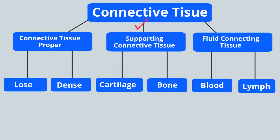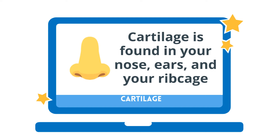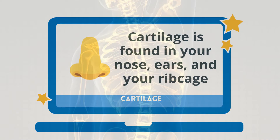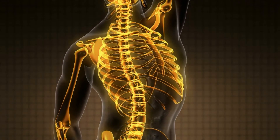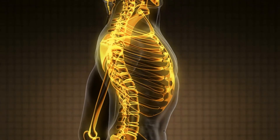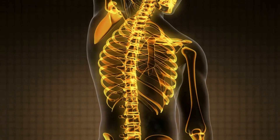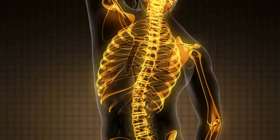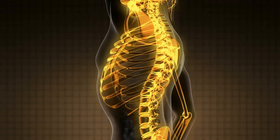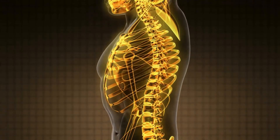We have supporting connective tissue like cartilage. Cartilage provides strength and flexibility while resisting wear, and it also cushions and shock absorbs where bones meet. Bones have several functions: they provide the framework and strength for the body, they help with movement, they store calcium, they have blood-forming cells, and they also create white blood cells.